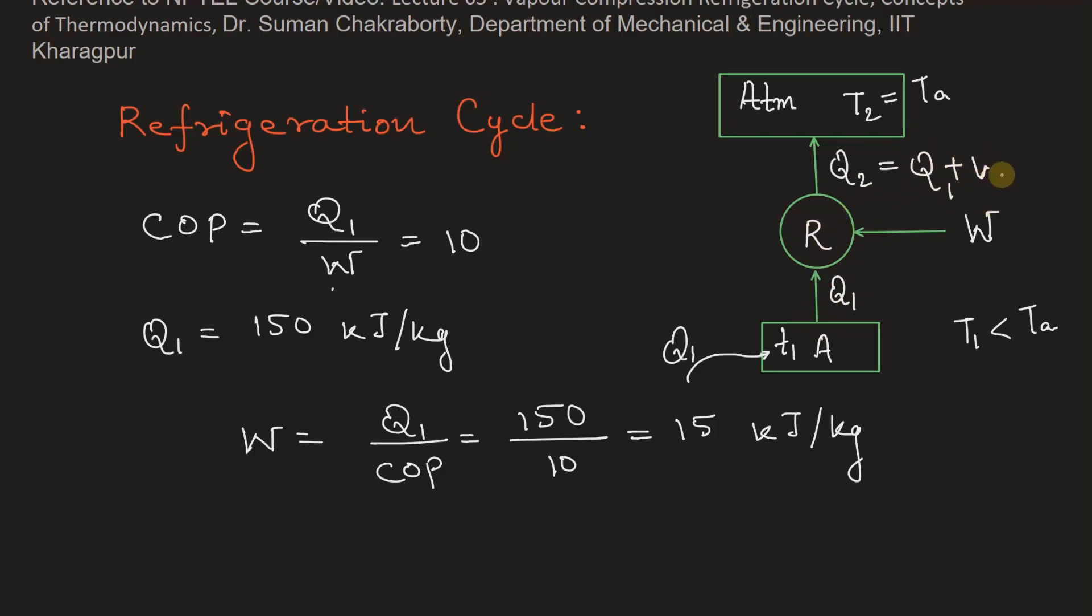So Q2 equals Q1 plus W. Q1 we know is given in the problem as 150 kilojoule per kg, plus work done which we just got is 15 kilojoule per kg.